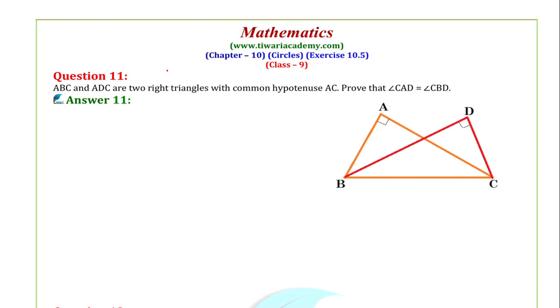Question 11 mein diya hua hai ki ABC and ADC are two right angles with common hypotenuse AC. Prove that angle CAD is equal to angle CBD.